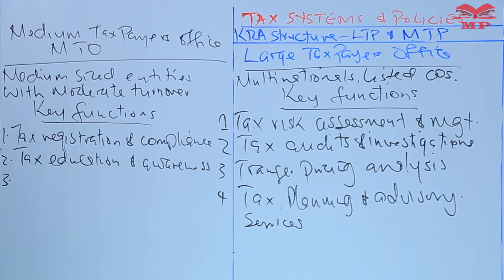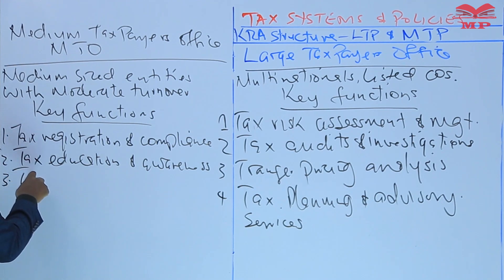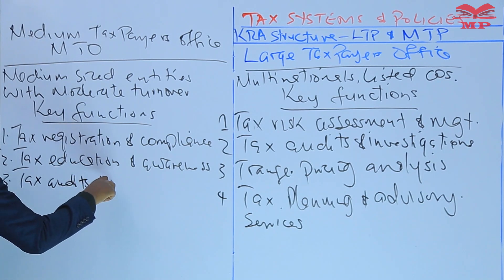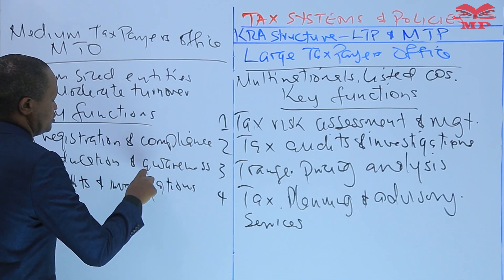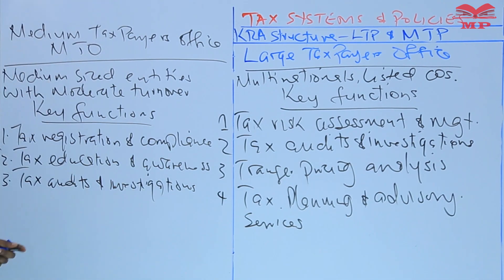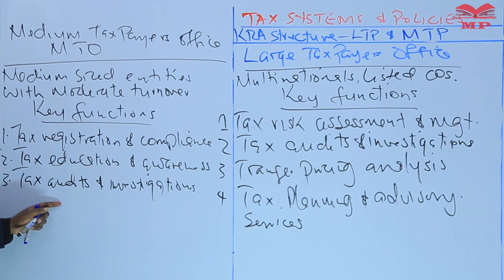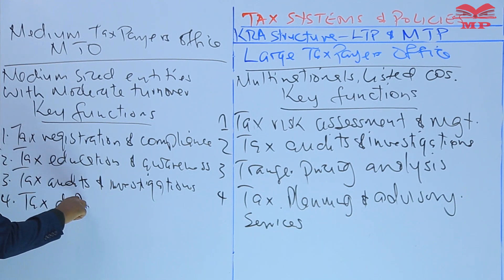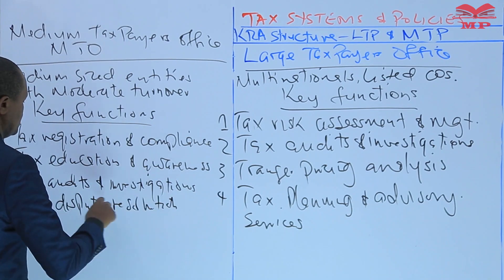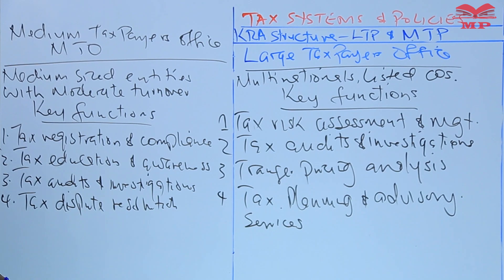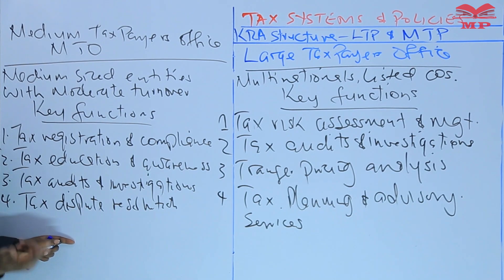The third key function of the Medium Taxpayer Office is tax audits and investigations — conducting tax audits and investigations of medium taxpayer organizations when necessary to ensure compliance with tax laws. The fourth key function is tax dispute resolution, which means assisting medium taxpayers in resolving tax disputes with the Kenya Revenue Authority through mediation and other dispute resolution mechanisms.